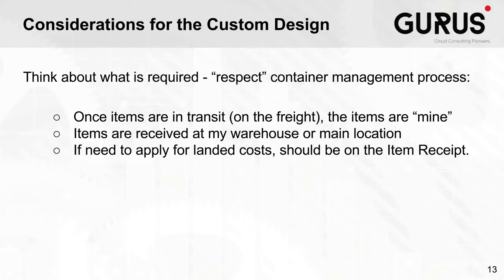Once items are received at your warehouse, you need to transfer them from 'On the Water' to the physical location — Warehouse A, B, or C — using a transfer order with an item receipt. Finally, if required, you apply landed costs on the item receipt to capture the true cost of the item: the purchase price plus transportation fees, duties, and other charges. These landed costs can be distributed based on rules like volume, weight, quantity, or monetary value.